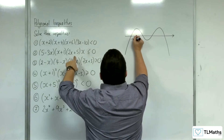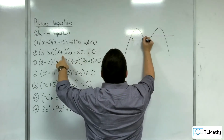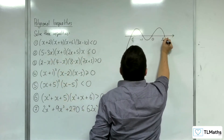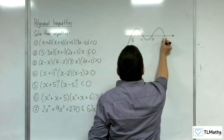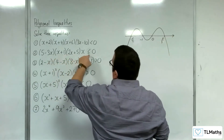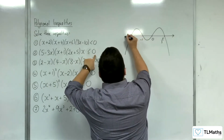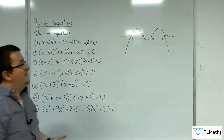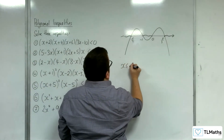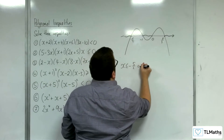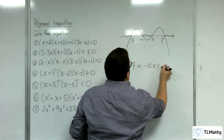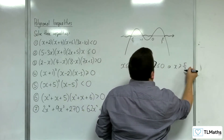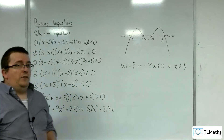Ordering those: minus 5 halves, minus 1, 0, and 5 thirds. Where is the graph below or equal to 0? We've got three regions, so we need three distinct inequalities: x is less than or equal to minus 5 halves, or x is greater than or equal to minus 1 but less than or equal to 0, or x is greater than or equal to 5 thirds.